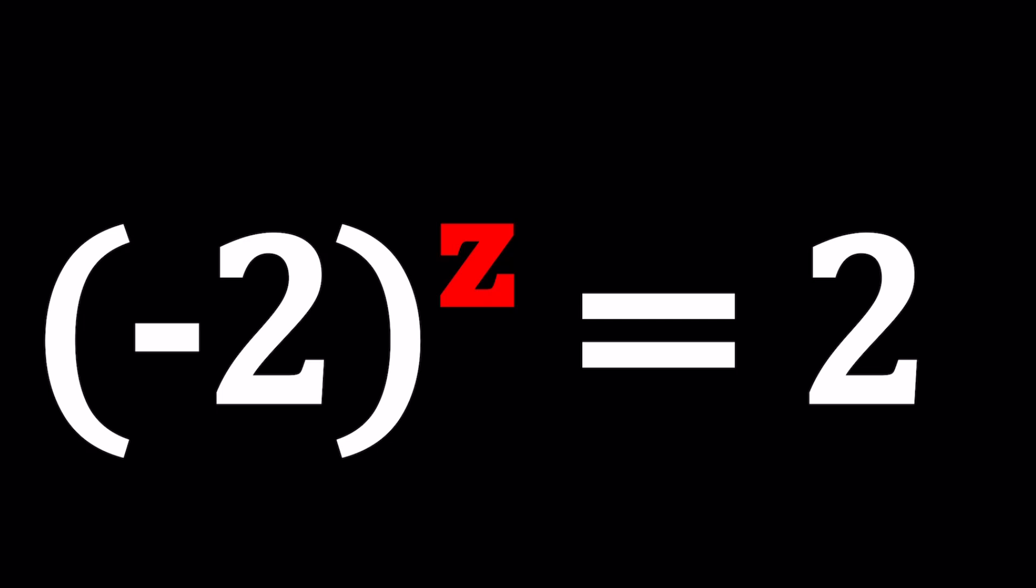So we have a negative base, but a positive result. So does that mean z has to be an even number? Well, no, because if you raise negative 2 to an even power, it's not going to give you a positive 2. If you raise it to the first power, it's going to give you negative 2, but not a positive 2. So you have to tweak it up a little bit. That's why we have to go into the complex world. Wait a minute, isn't this channel all about complex numbers? Yes, it is. So let's dive in.